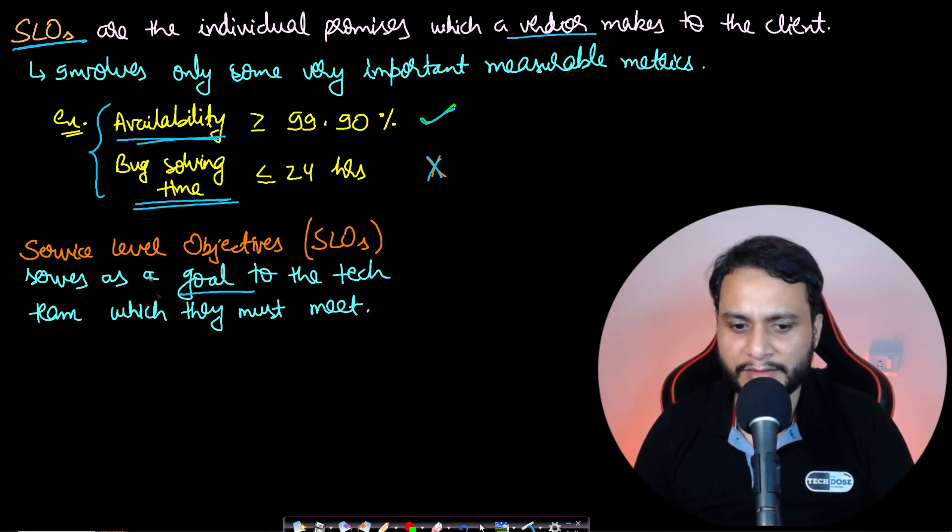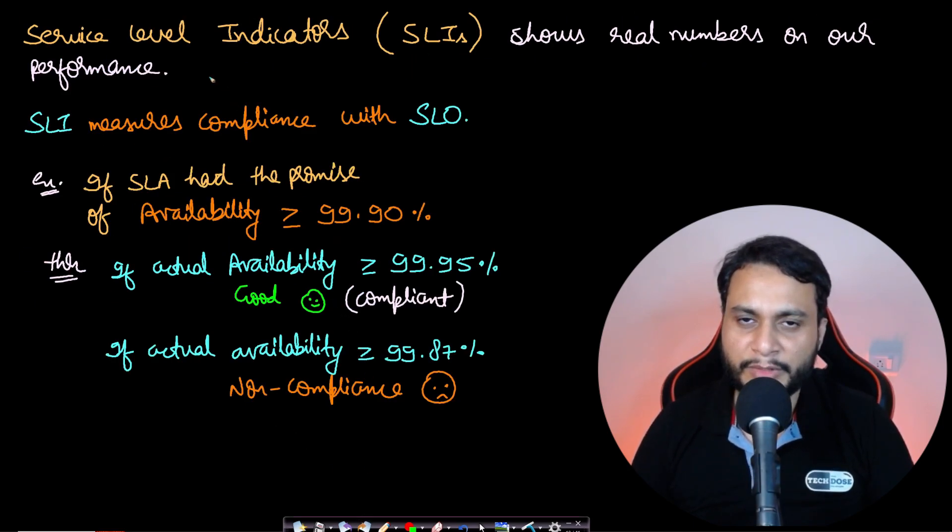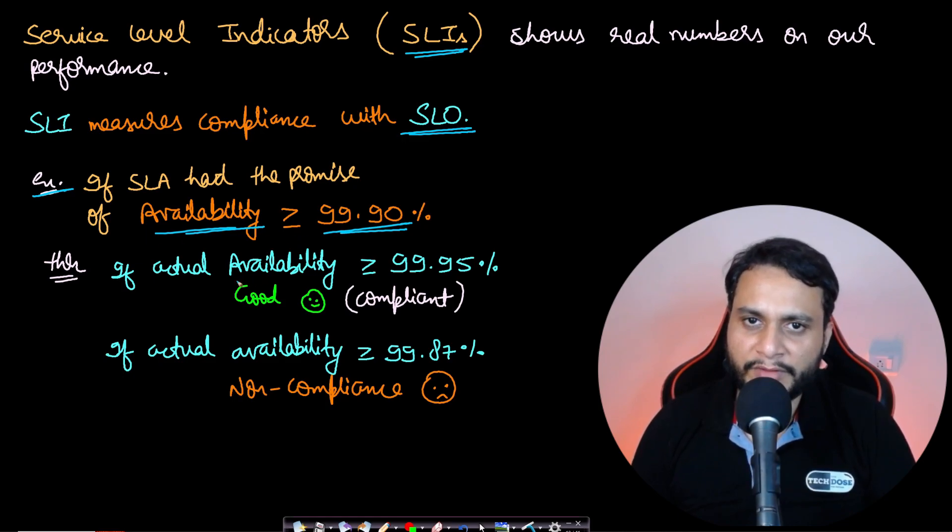So I think this should also be clear. Coming on to our third point, service level indicators - that is the SLIs. They show the real numbers on our performance. The SLI measures the compliance with the SLO. As I had given in the car example, in this case if the SLO had the promise of, let's say, availability to be greater than or equal to 99.9%, and if the actual availability turns out to be greater than or equal to 99.95%, then the system is compliant. We are living up to the promise, so we should always deliver greater than or equal to what we have promised. Under promise and over deliver.